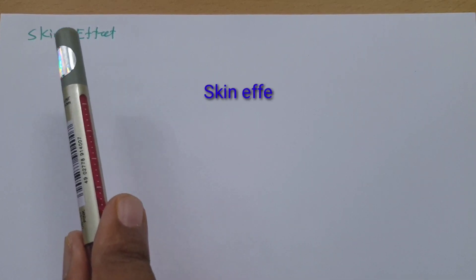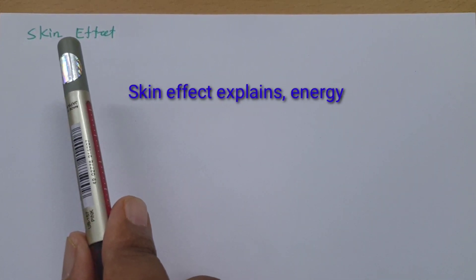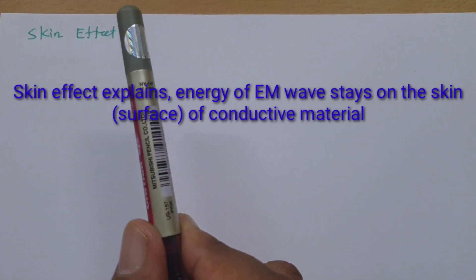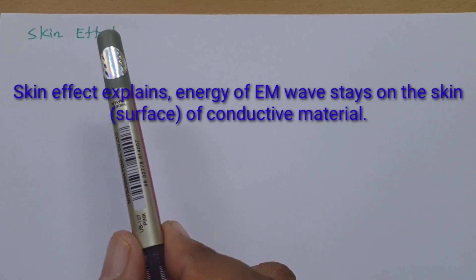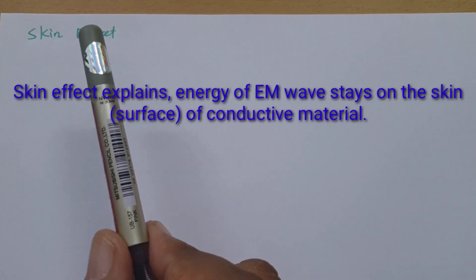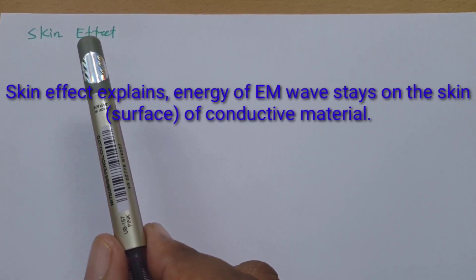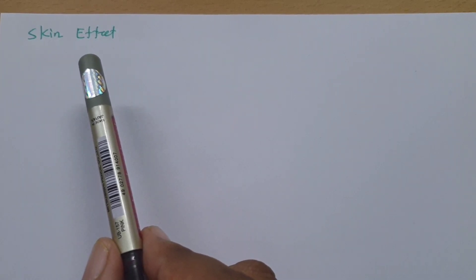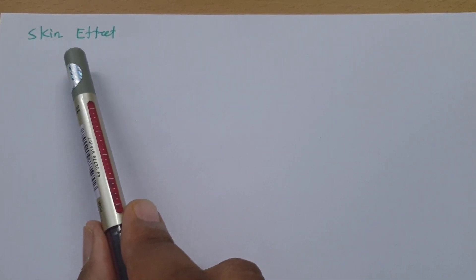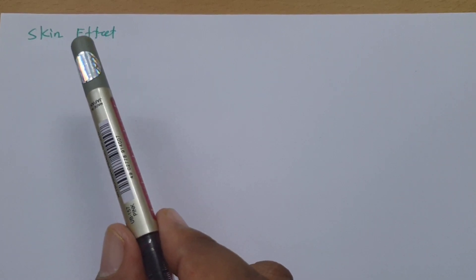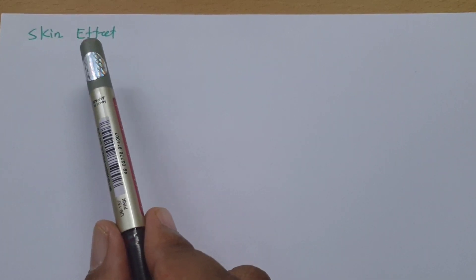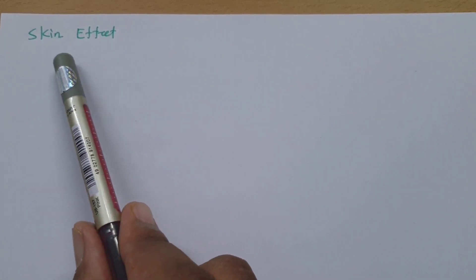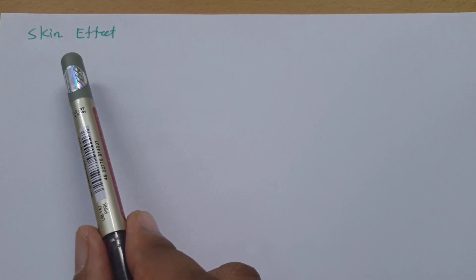Skin effect explains electromagnetic wave energy that is lying on the skin of any conducting material. You will find signal strength is more on the skin of any conducting material, and as you go inside the metal, there will be degradation of signal strength. How that degradation is happening and what parameters it depends on — all those things we will discuss in this session.